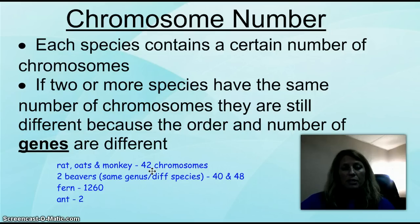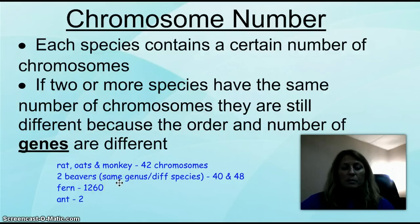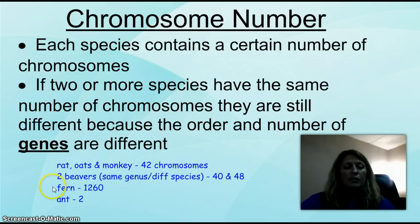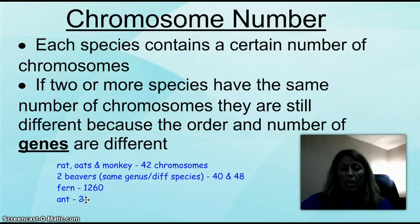Even though they have the same number of chromosomes, they are totally different organisms because of the genes. For example, two beavers — one's an American and one's a European. They have the exact same genus but are different species: the American has 40 chromosomes and the European has 48. To show the extremes: a particular fern has 1260 chromosomes — the most known to date — and a particular species of ant has only two. The fruit fly has eight chromosomes and is the most common organism scientists study when doing genetic tests.